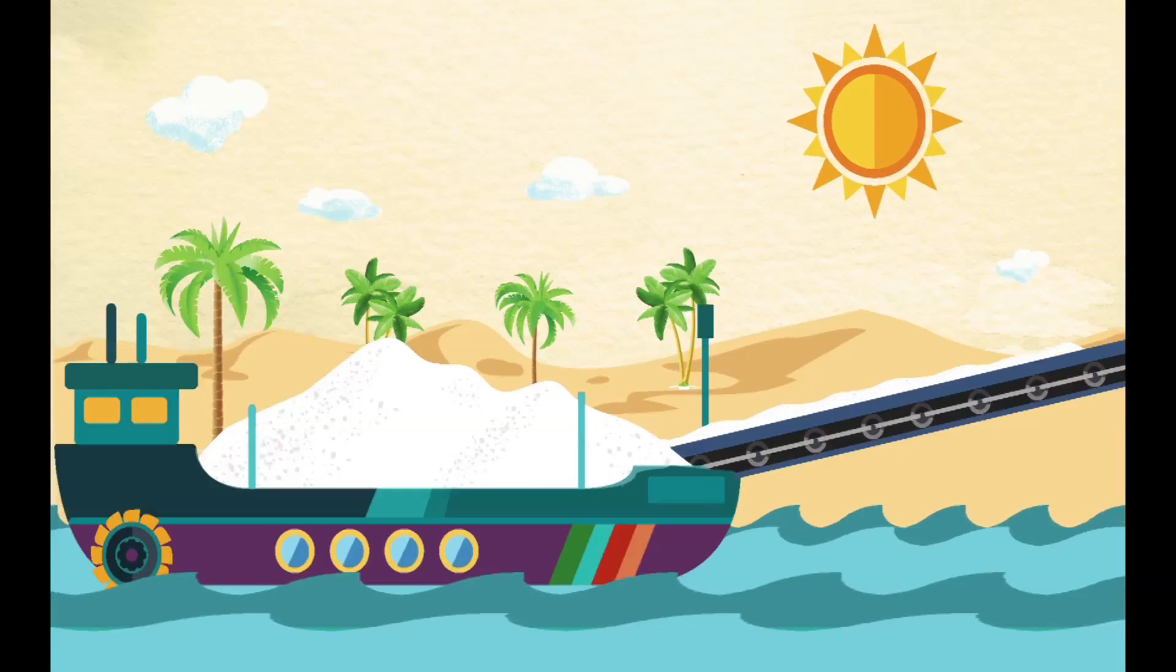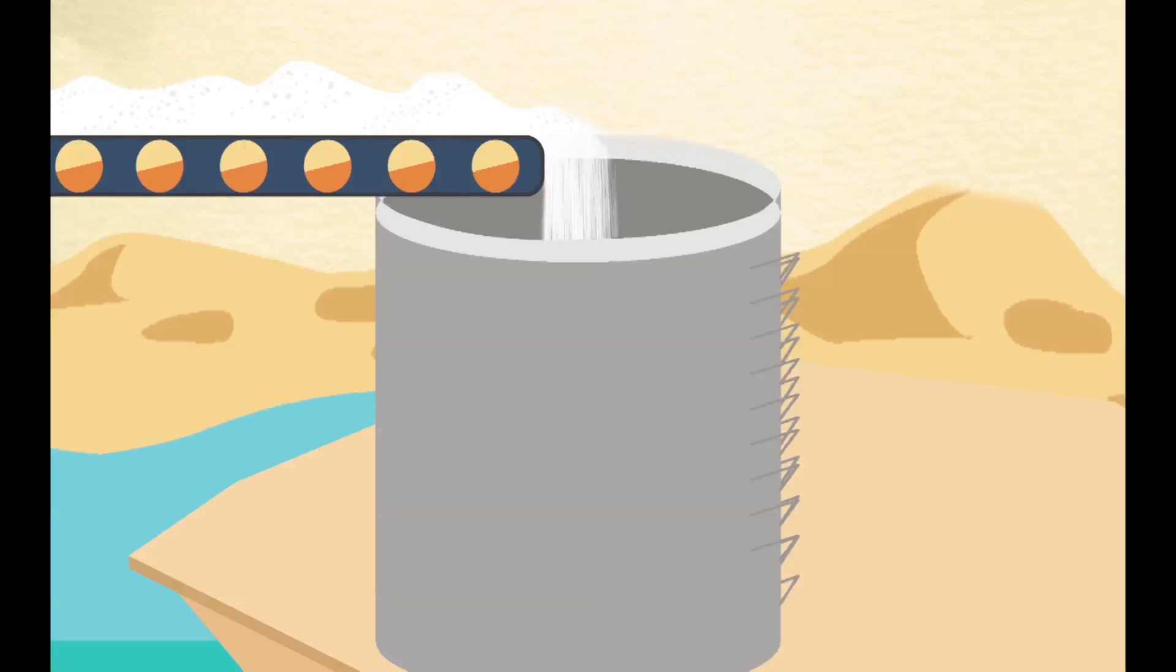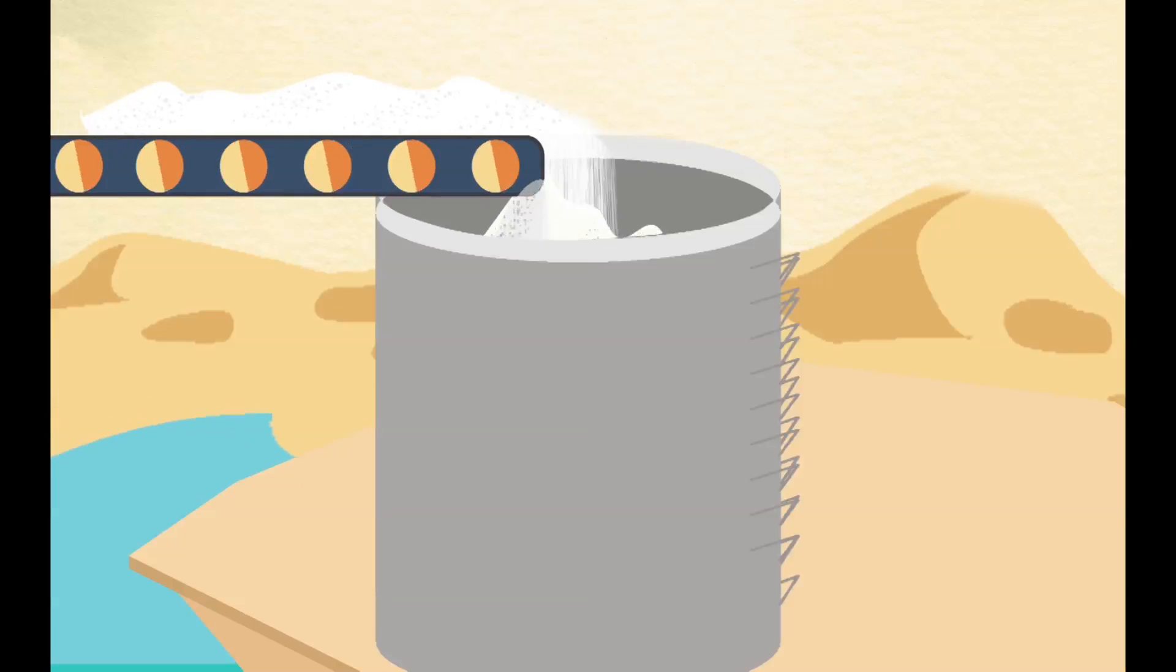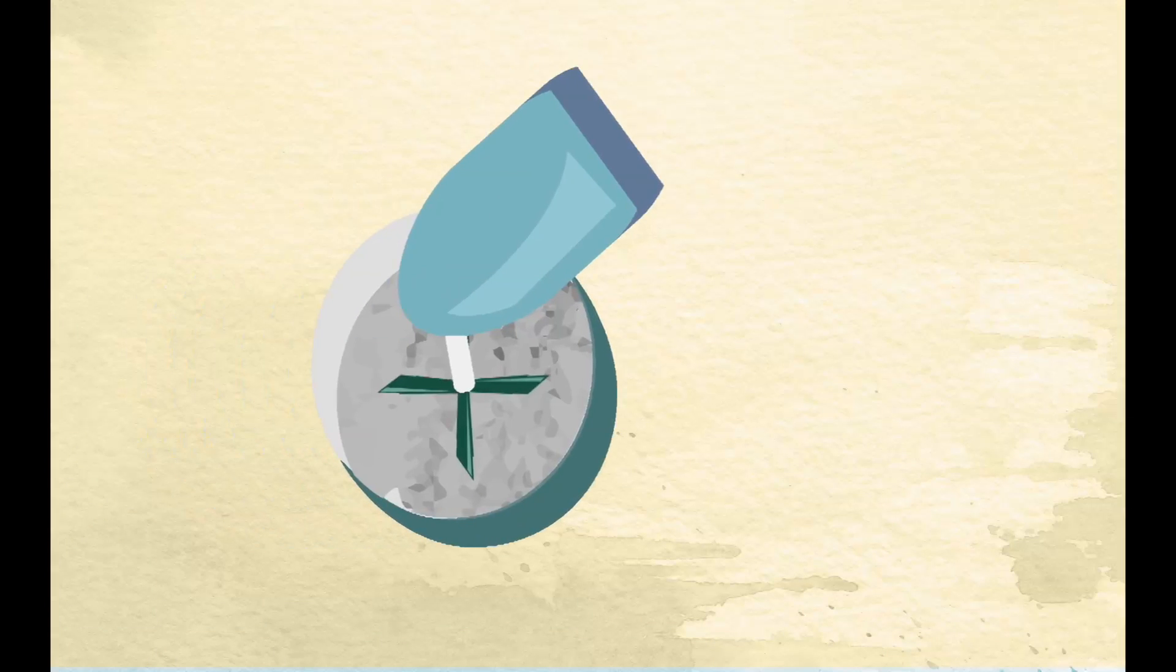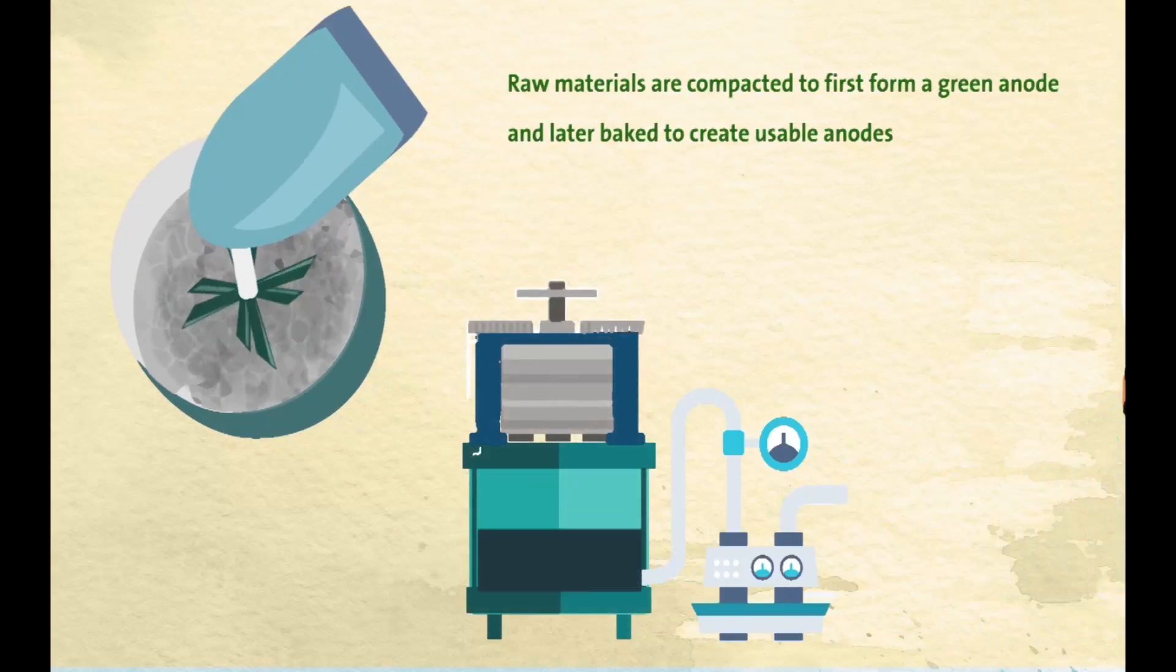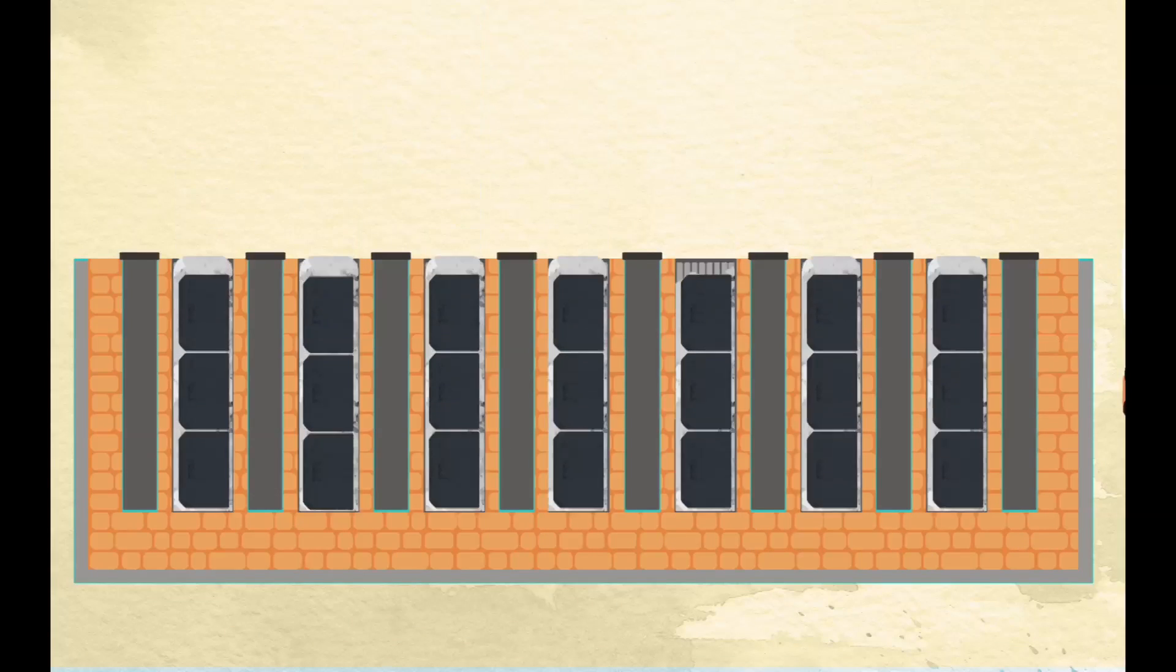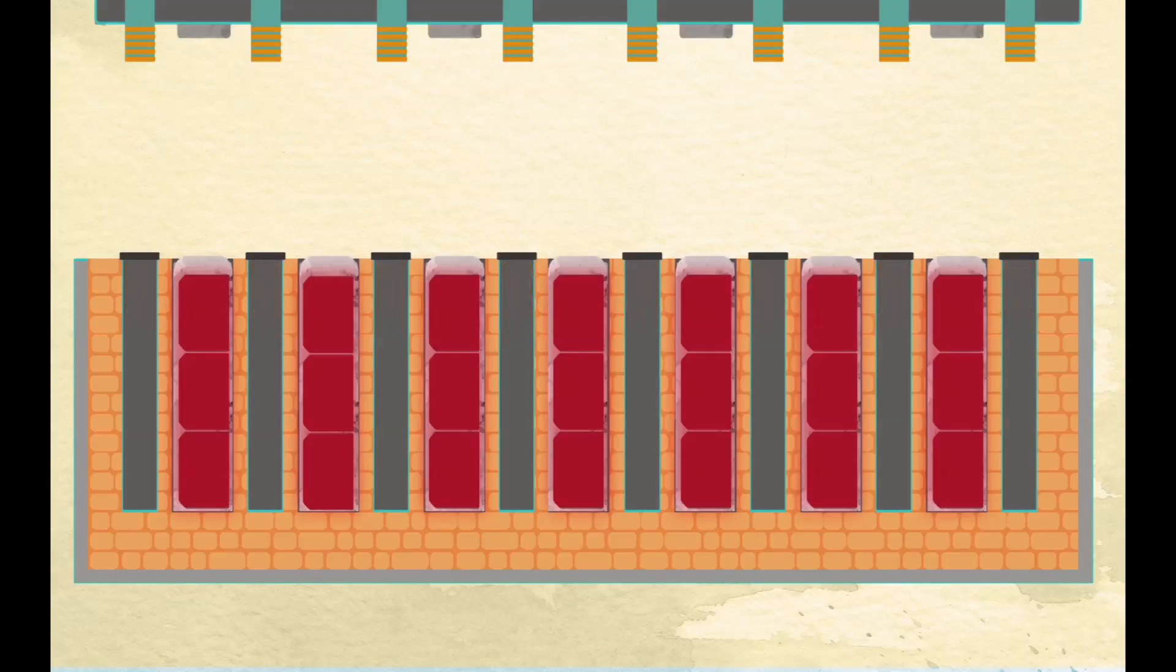These raw materials have their own storage facilities at Qatalum's port facilities in Mesaieed and the company's nearby smelter. Qatalum has an integrated carbon plant which makes carbon anodes. Raw materials such as coal tar pitch, petroleum coke and recycled anodes are compacted to first form a green anode and later baked to create usable anodes.